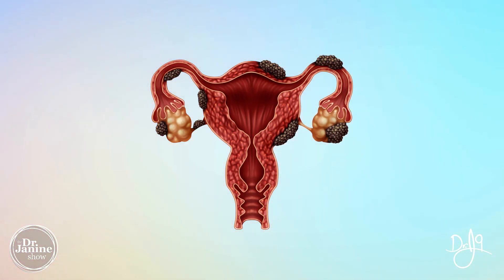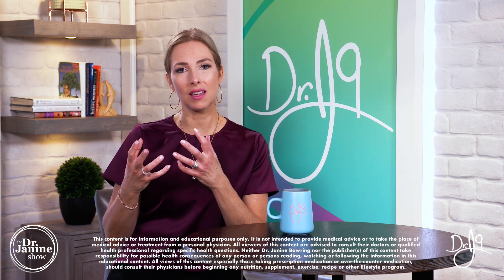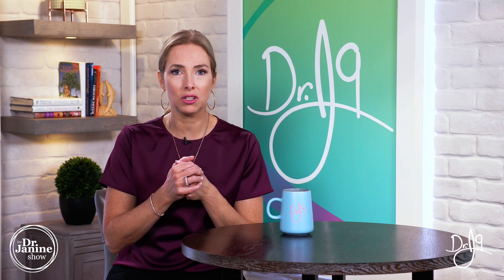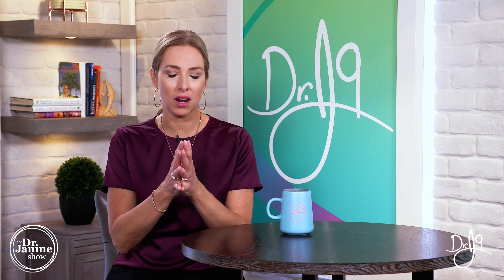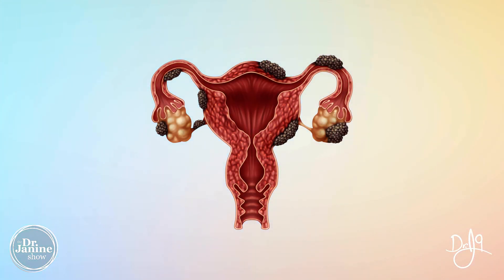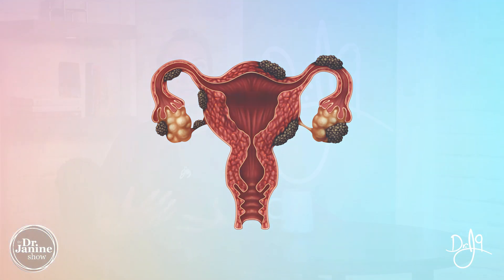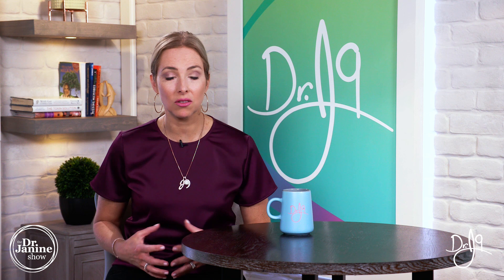Endometriosis is basically the implantation of endometrial tissue — which is supposed to be in the uterus — to places outside of the uterus. This endometrial tissue, which is the inner mucous membrane of the uterus, can implant in places like the fallopian tubes, the ovaries, and other organs in the pelvic region.